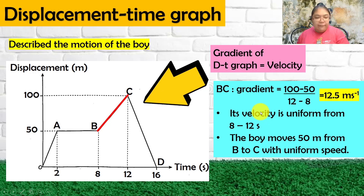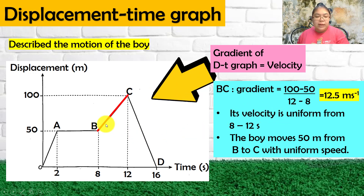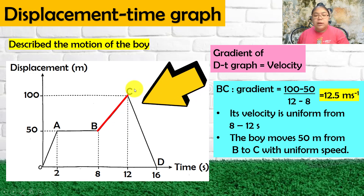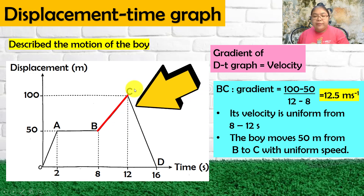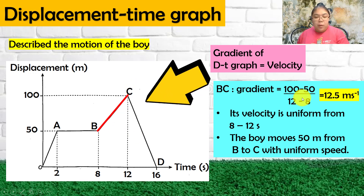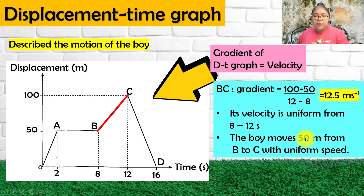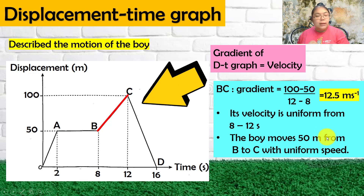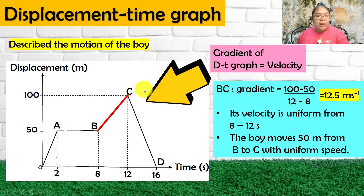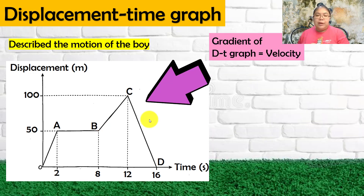The gradient is also the velocity, so from 8 to 12 seconds the velocity is uniform at 12.5 m/s. The boy moves another 50 meters from B to C, and the speed is uniform.